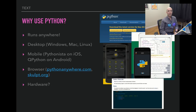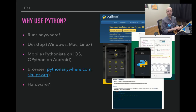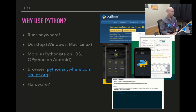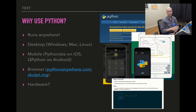Another reason you might want to use Python is that it's everywhere. Whatever device you're viewing this on, there's a way to run Python on it. It's available on all desktop machines — Mac, Windows, Linux. It's available on mobile devices — Android and iOS. There are really interesting Python apps like Pythonista on iOS and QPython on Android that give you a little Python terminal where you can type in Python code and run it. That's super useful for learning.